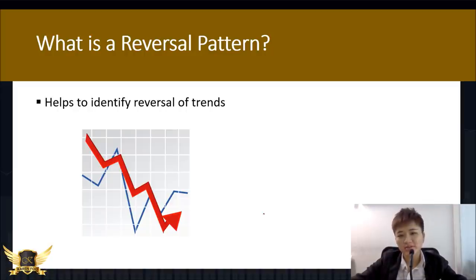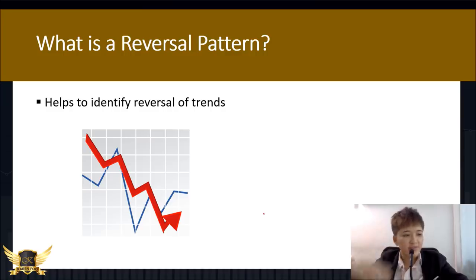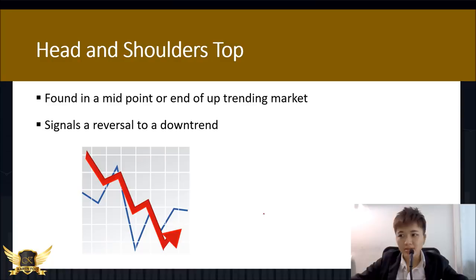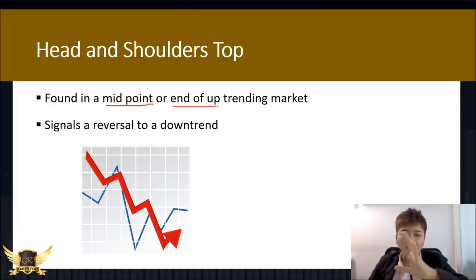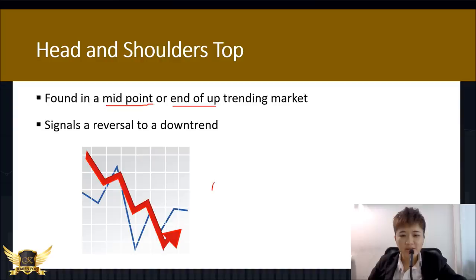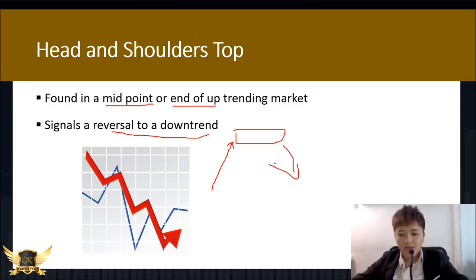The second type of pattern is reversal chart patterns. As the name suggests, price is going to U-turn. If you're already in a trade and see reversal patterns, prepare to get out or scale out gradually. The first reversal pattern is the head and shoulders top, which you'll normally find at the midpoint or end of an uptrending market — it signals that the bullish trend may be ending.